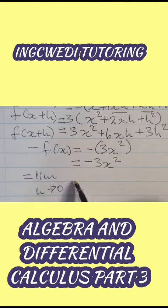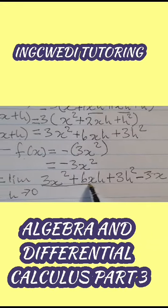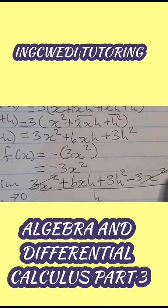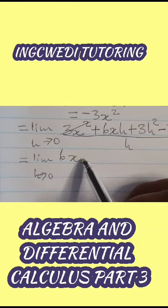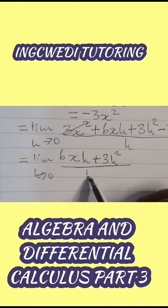For f of x plus h minus f of x over h, the 3x squared terms cancel, and we have 6xh plus 3h squared over h.